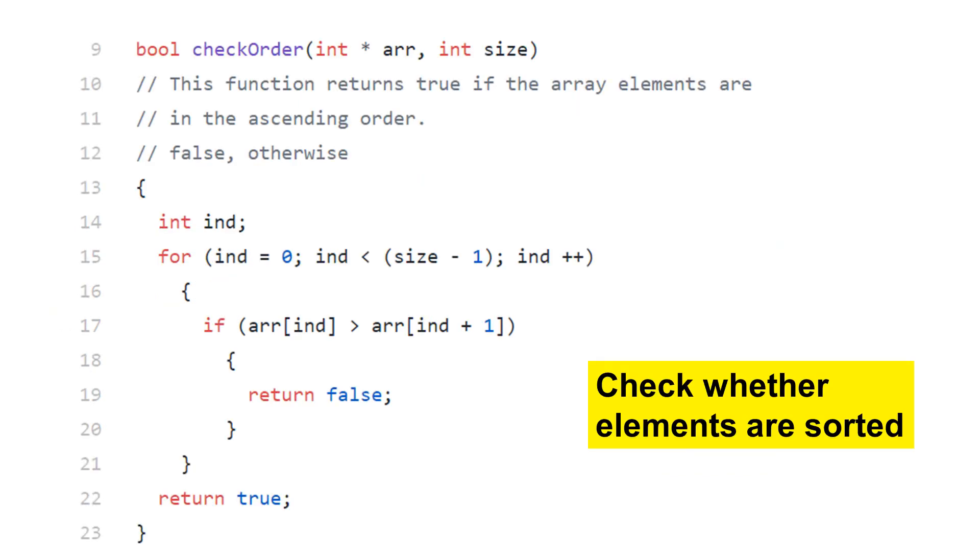This slide shows the checkOrder function. Let's see what this function does. It checks whether the elements are sorted in ascending order. This function has only one loop. It starts from the very first element to the second last element. It checks whether any element is greater than the element after it.